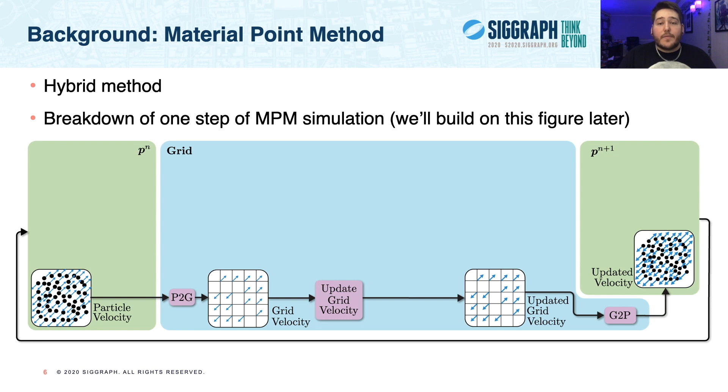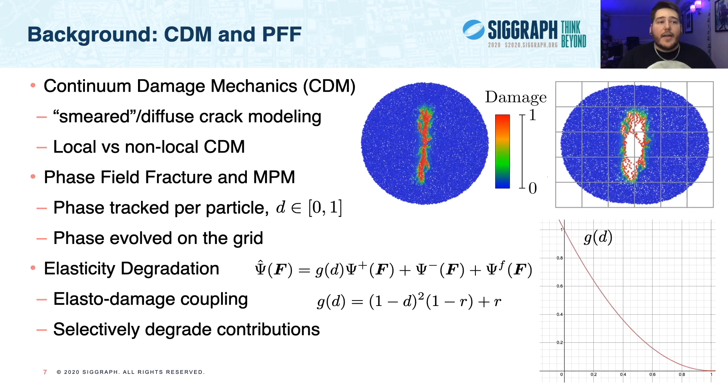The core loop of MPM entails transferring data from the particle view to the grid view, and then using the grid to perform force computations and update velocities. Then, these updated velocities are transferred back to the particles and used to add back to particle positions, and then this loop repeats.